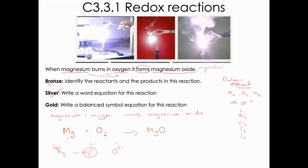That's our symbol equation, but it's not balanced. On the left I've got two oxygens, so I need two oxygens on the right-hand side as well. I can't change the chemical formula — if I wrote MgO2, that would be a different chemical. The only place I can put a number is in front of the chemical. Putting a 2 in front of MgO gives two oxygens, which means I also need two magnesiums on the left, so I put a 2 there as well.